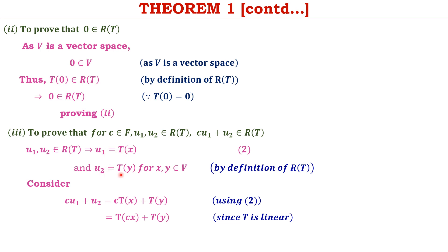With U1 equal to T of X and U2 equal to T of Y for X and Y belonging to V, consider CU1 plus U2. Substituting, this becomes C times T of X plus T of Y. Since T is linear, C times T of X can be written as T of CX, giving T of CX plus T of Y, which by linearity combines to T of CX plus Y.